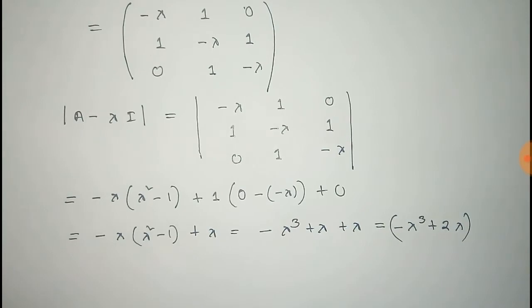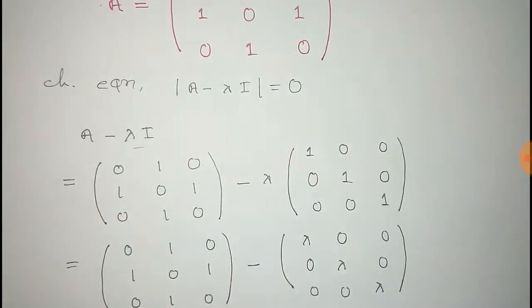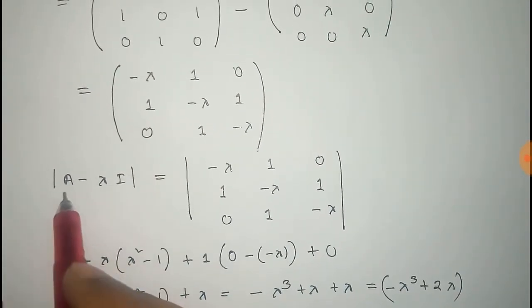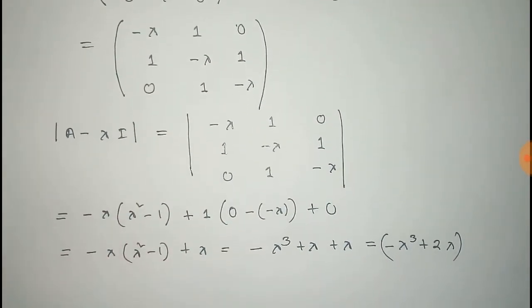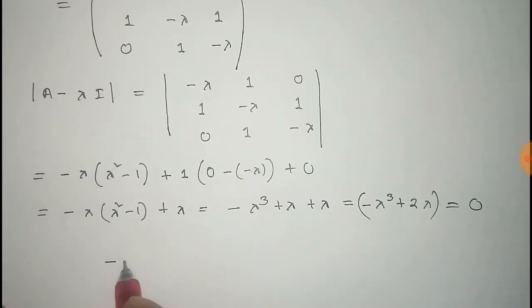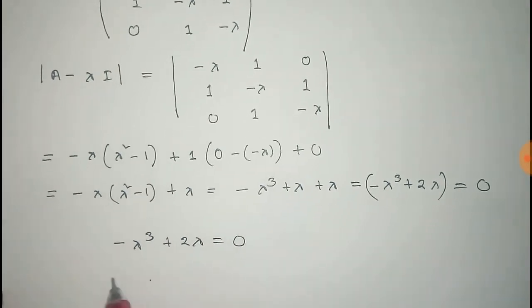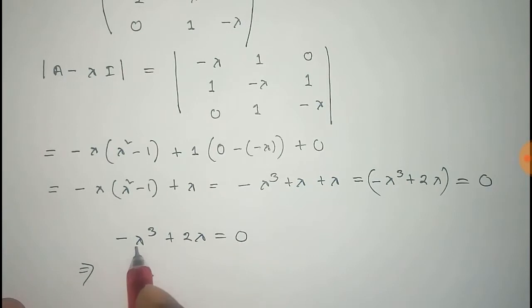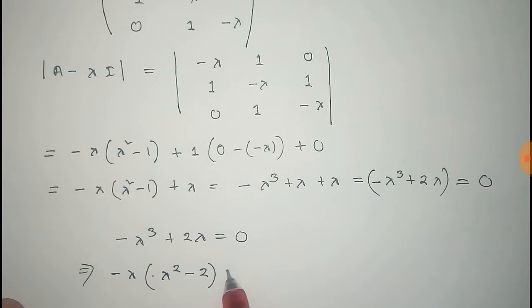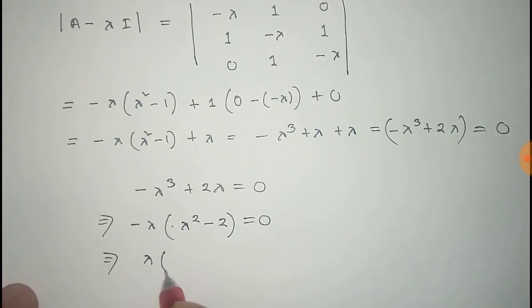Now, from this, we see that the determinant of A minus lambda I is equal to 0. So this expression equals 0: minus lambda cubed plus 2 lambda equals 0. We take minus lambda common from these two terms, so it becomes minus lambda times (lambda squared minus 2) equals 0.